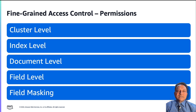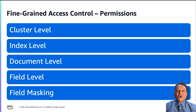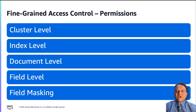Third, document-level security lets you restrict which documents in an index a user can see. When creating a role, you specify an index pattern and an OpenSearch query; users mapped to that role can see only the documents that match that query. Fourth, field-level security lets you control which document fields a user can see — when creating a role, add a list of fields to either include or exclude. Fifth, field masking is an alternative to field-level security that lets you anonymize the data in a particular field rather than remove it altogether.